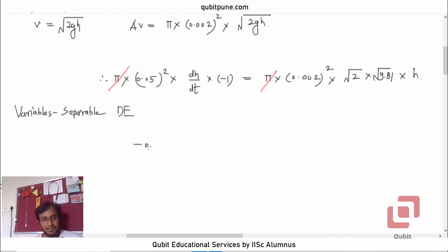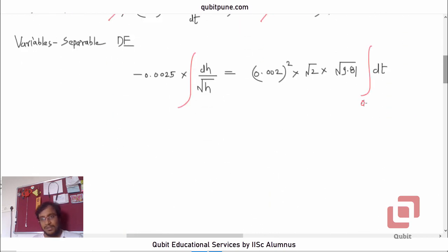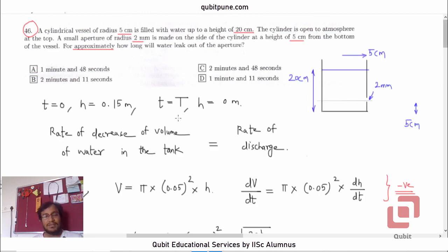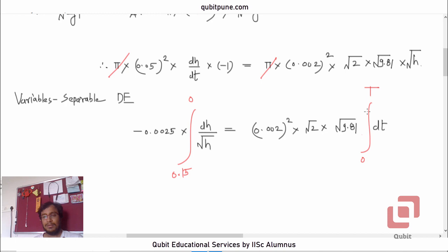Let us first get rid of π. Therefore, -0.0025 × dh/√h = (0.002)² × √2 × √9.81 × dt. Now let us bring in the limits: when t = 0, h = 0.15, and when h = 0, t = T. That's what we want.